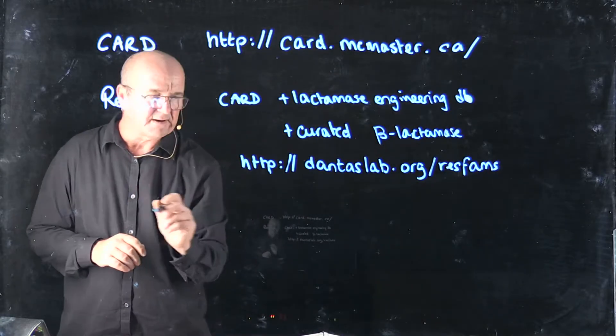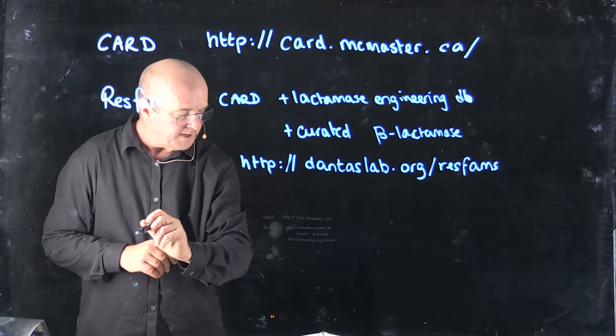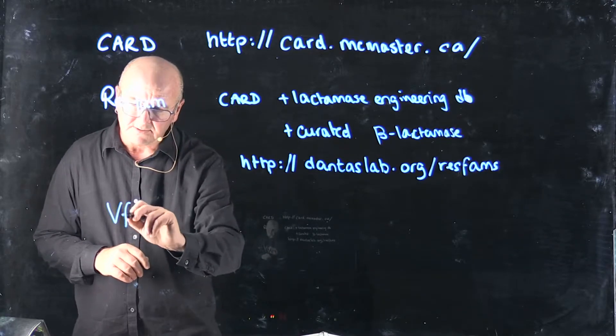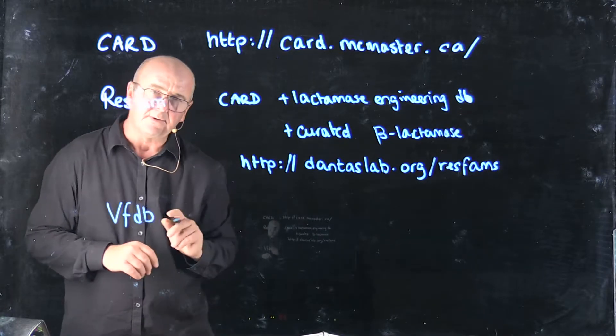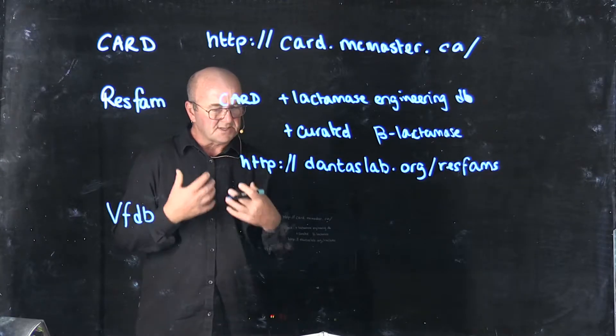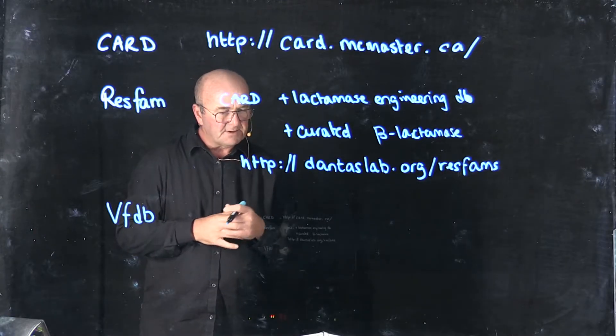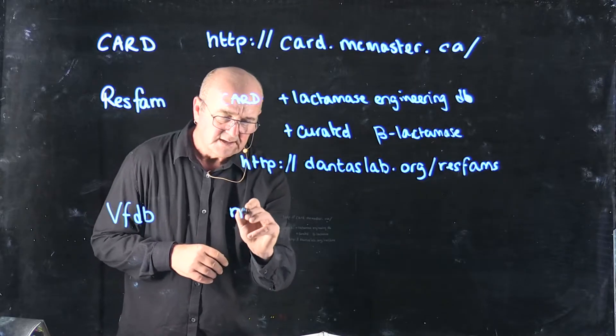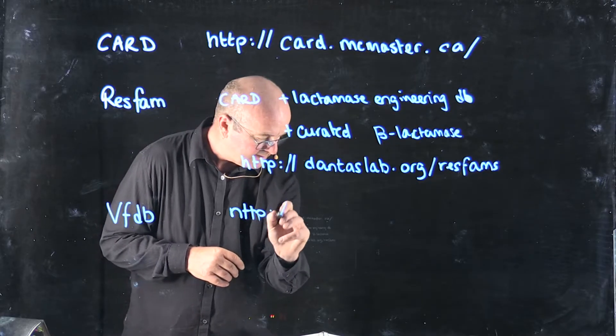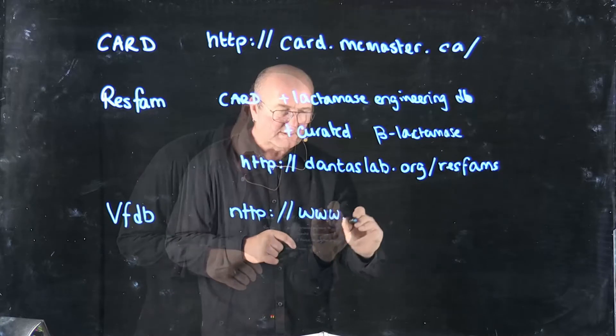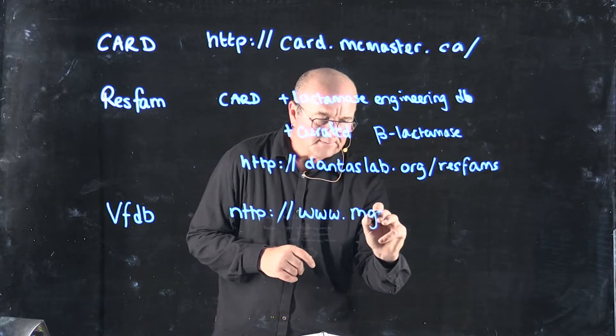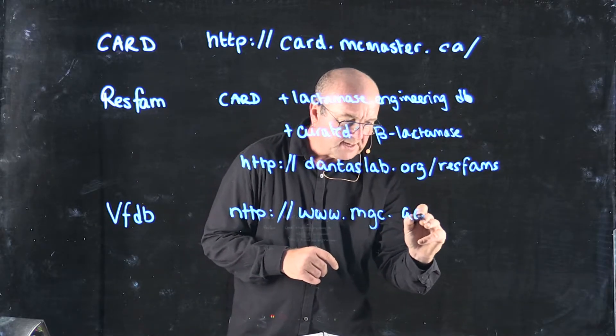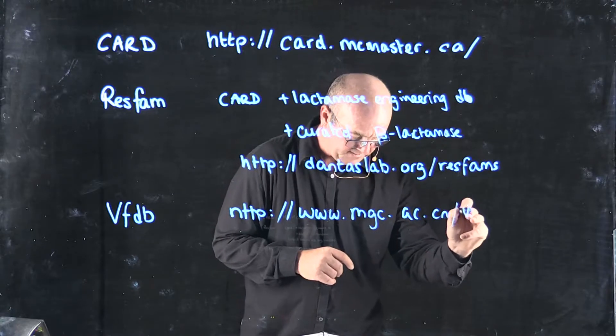And then, not strictly an antibiotic resistance database, but another one that's quite useful and important when you're thinking about bacterial pathogens and disease is the Virulence Factors of Pathogenic Bacteria Database. And that's available at www.mgc.ac.cn slash VFS, the Virulence Factors.